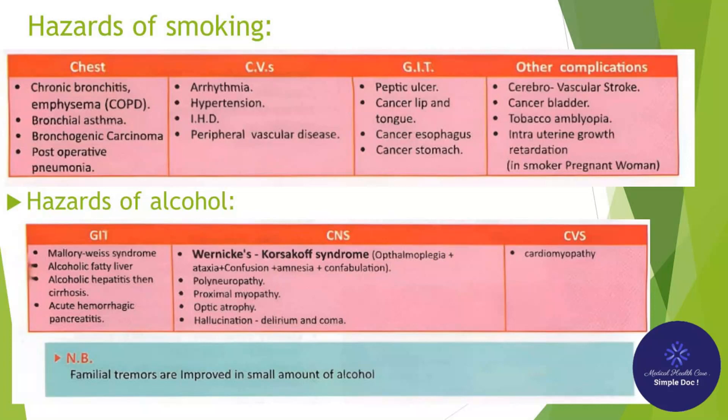Hazards of smoking — Chest: COPD, bronchial asthma, bronchogenic carcinoma, postoperative pneumonia. CVS: arrhythmia, hypertension, IHD, peripheral vascular disease. GIT: peptic ulcer, cancer of the lip, tongue, esophagus, and stomach. Other complications: cerebrovascular stroke, cancer bladder, tobacco amblyopia, and intrauterine growth retardation in females.